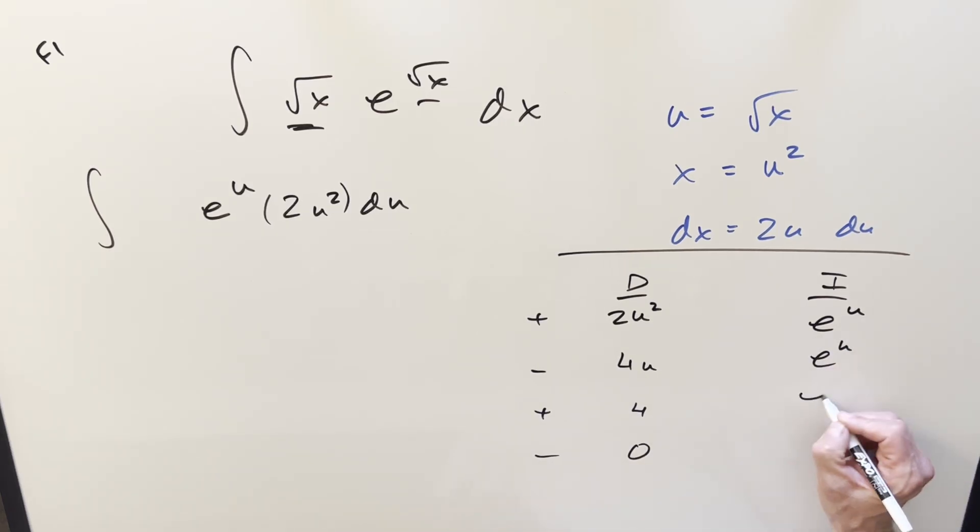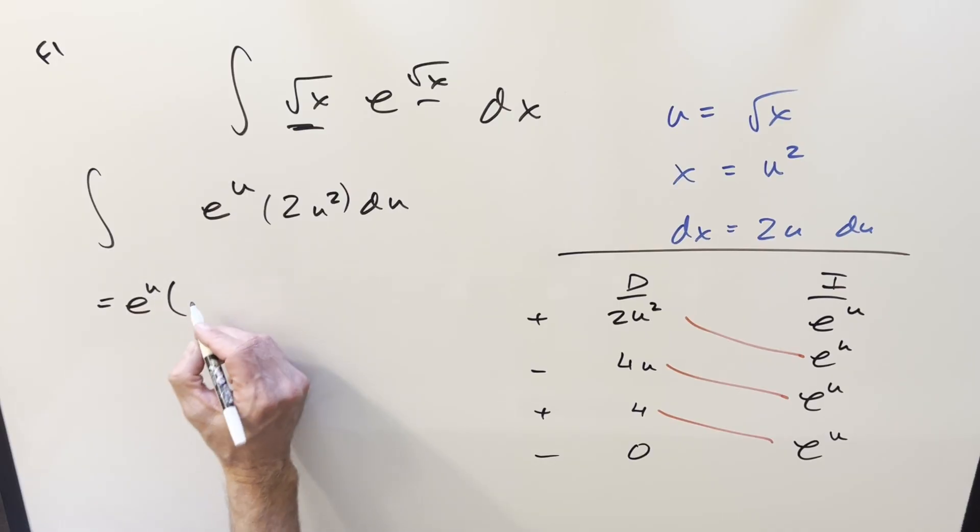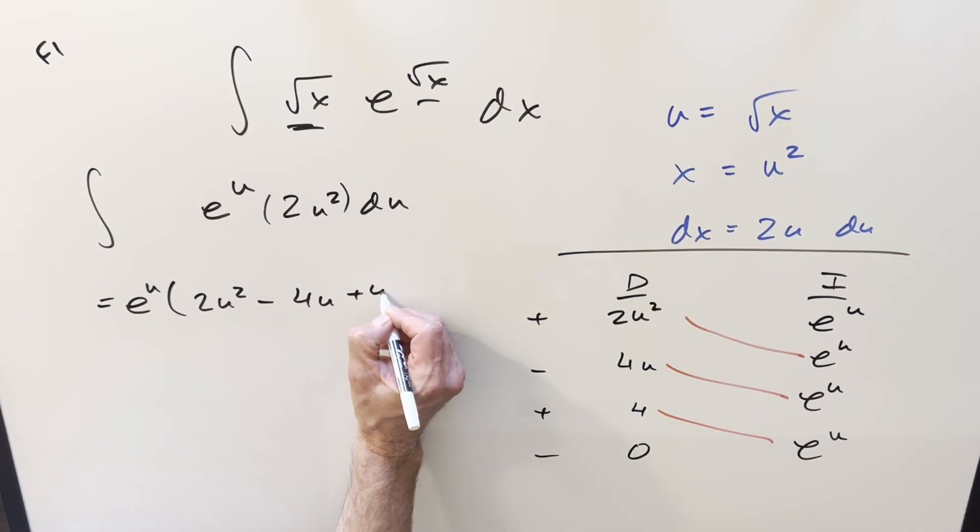And all these are going to be the same. We'll get e to the u, e to the u, e to the u. So we have our solution in u, and the last row is a 0, so we're not going to worry about integrating anything. Because we have e to the u in common, let's factor that out front. So we're going to have e to the u, 2u squared minus 4u plus 4.